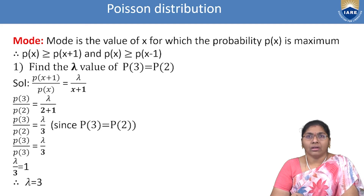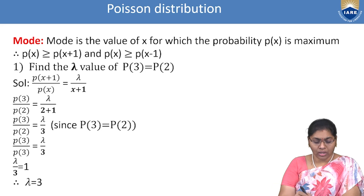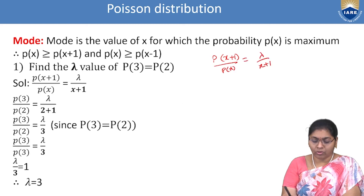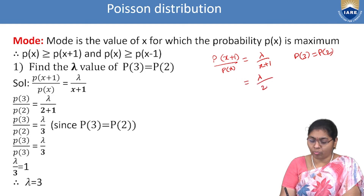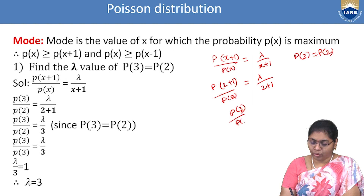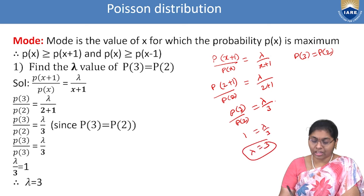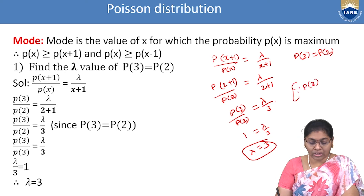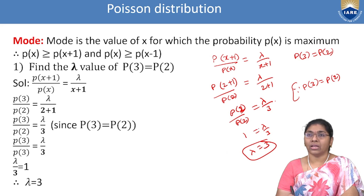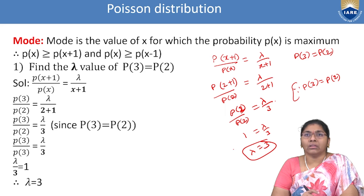Problem: Find the value of λ given P(3) = P(2). Solution: Using the recurrence relation P(x+1)/P(x) = λ/(x+1). Here x = 2, so P(3)/P(2) = λ/3. Since P(3) = P(2), their ratio equals 1, giving λ/3 = 1, therefore λ = 3.